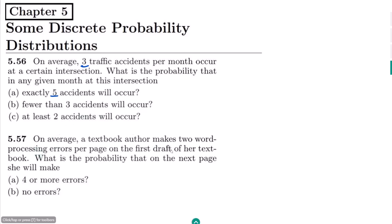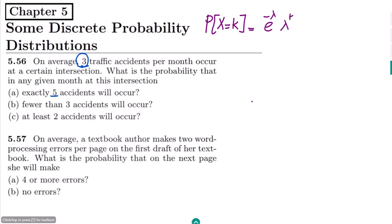Similarly, in 5.57 we are also given some average number of errors in a textbook. In all of these questions where the average number of traffic accidents, average number of errors, or average number of items are given, and we have to find the exact number or some maximum or minimum limit, we use the Poisson probability distribution. The formula is: P(x = k) = e^(−λ) × λ^k / k!, where λ is the average value.